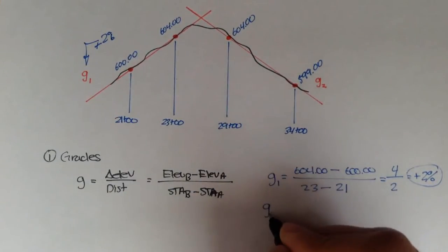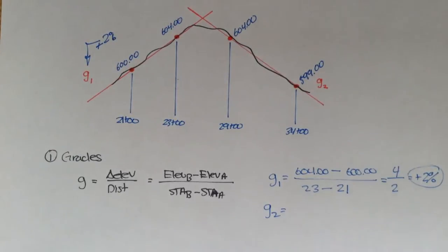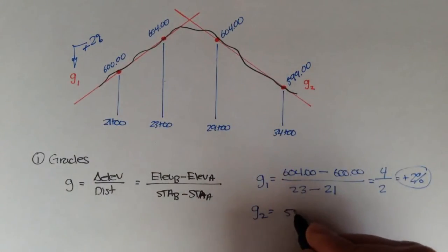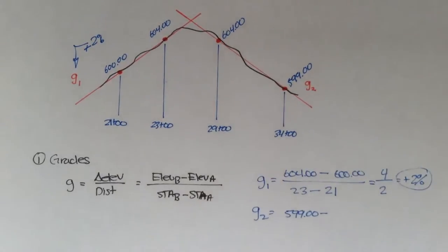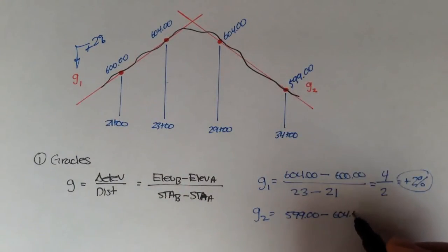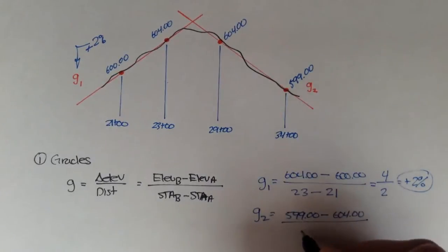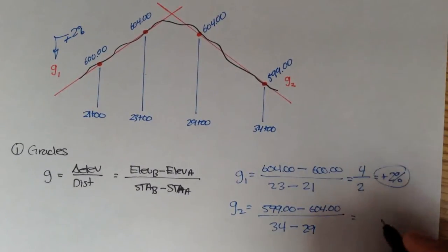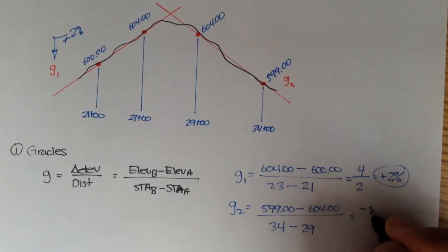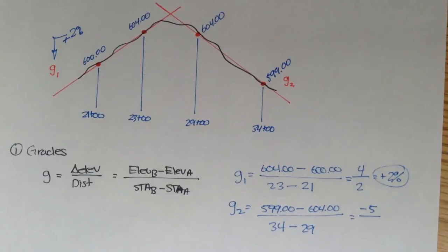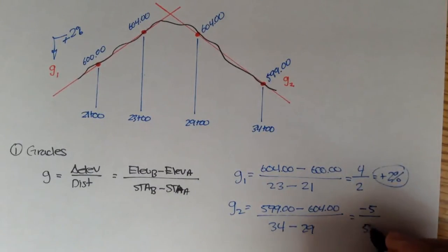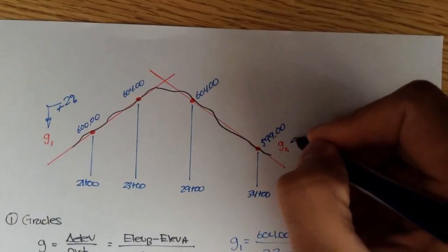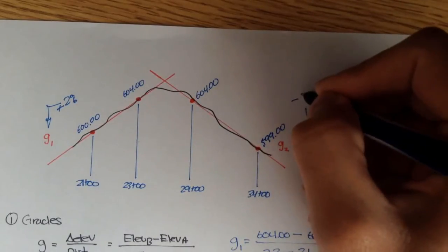For grade 2, again it's change in elevation over the change in stations. Elevation B here would be 599 minus the first elevation 604, over 34 minus 29. So grade 2 is negative 5 over 5 — 599 minus 604 over 34 minus 29, which is also 5. So grade 2 is actually a negative 1% grade.